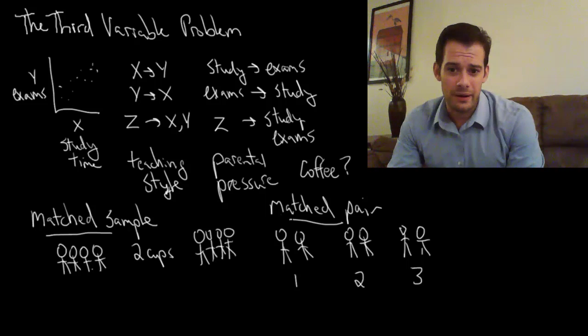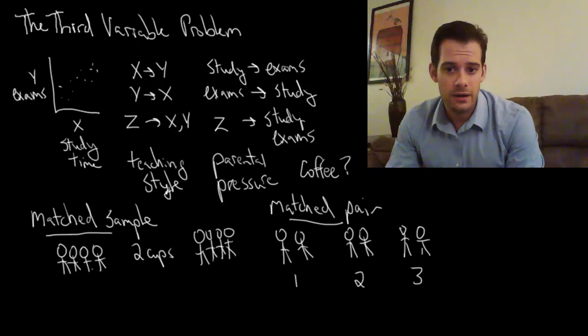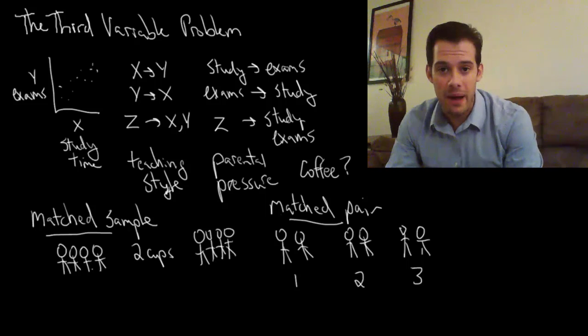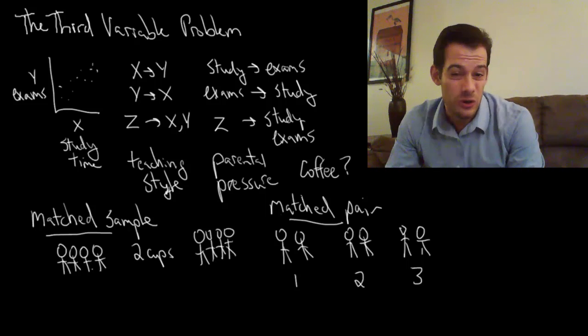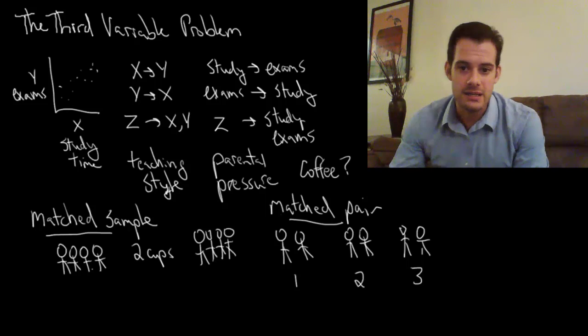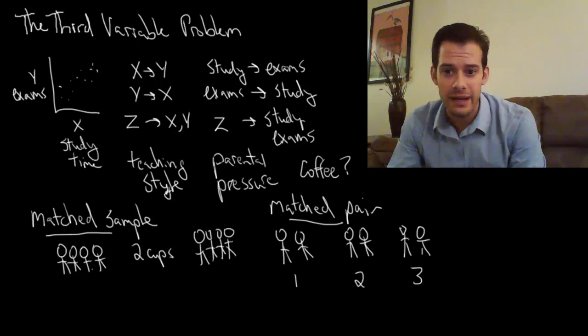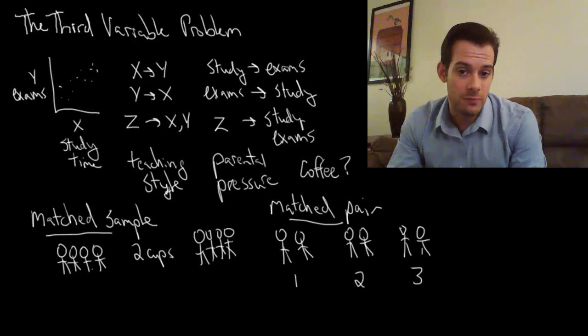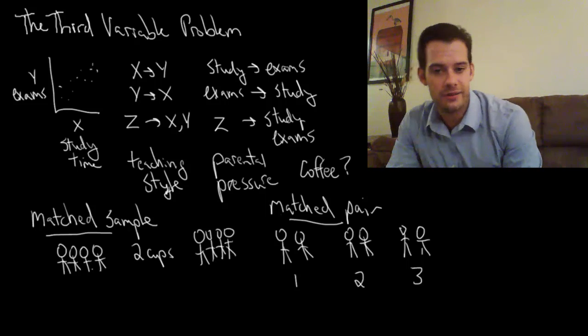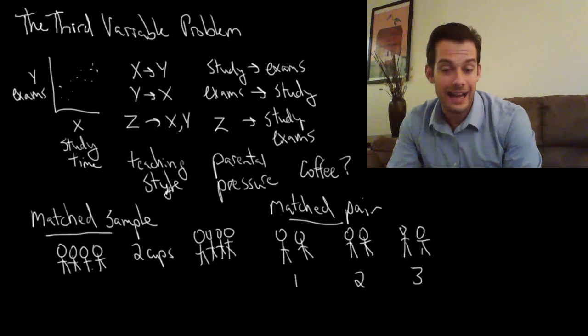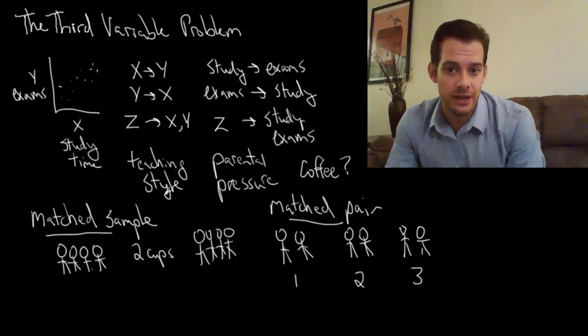Now, the real problem here is that even if we eliminate coffee, we've only eliminated one item from an infinite list of other possible items. If it's not coffee, it could still be something else, right? No matter how many of these third variables I eliminate, I still can't say that studying more increases exam score or that higher exam scores causes people to study more.